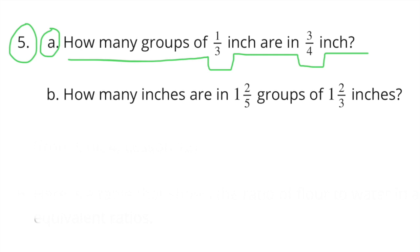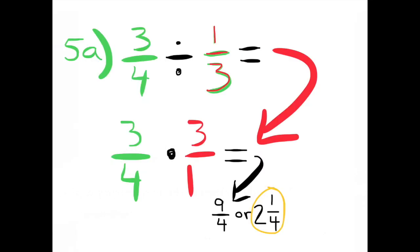Number five, part a: How many groups of one-third inch are in three-fourths inch? Three-fourths divided by one-third equals three-fourths times the reciprocal of one-third, which equals nine-fourths, or two and one-fourth.